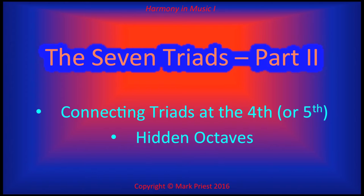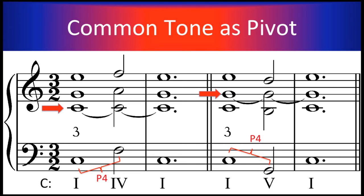Connecting the 7 Triads of C Major, Part 2. We learned to connect primary triads that shared a tone — tonic and subdominant, or tonic and dominant — by retaining the common tone in both triads in the same voice. This principle of using a single tone as a pivot between two chords can be extended and applied to the four remaining scale triads as well.